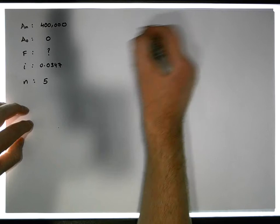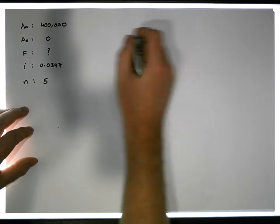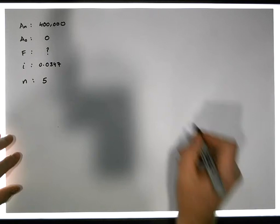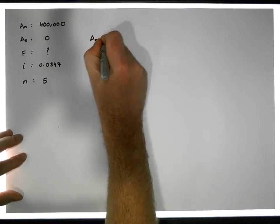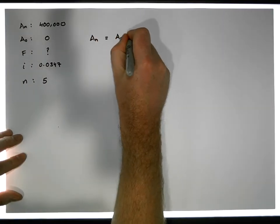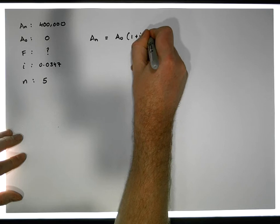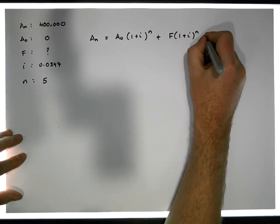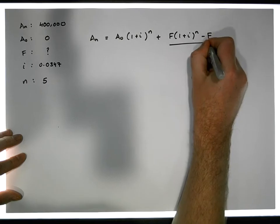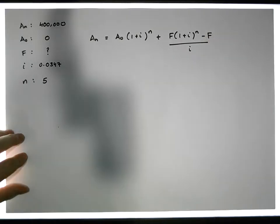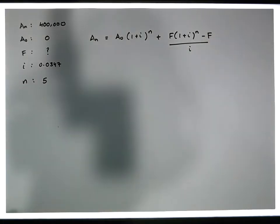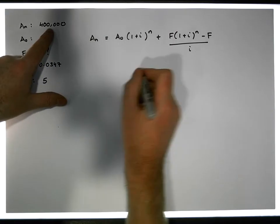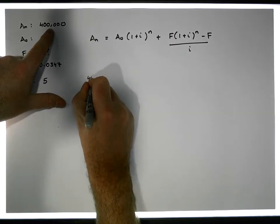From a formula perspective we have all the pieces of information we require, so we can calculate what f is. Let's apply our mortgage sinking fund annuity formula. It looks like this: Aₙ = A₀(1+i)ⁿ + f·[(1+i)ⁿ − f] / i. We require four hundred thousand euros to be in the account in five years' time, so Aₙ = 400,000.